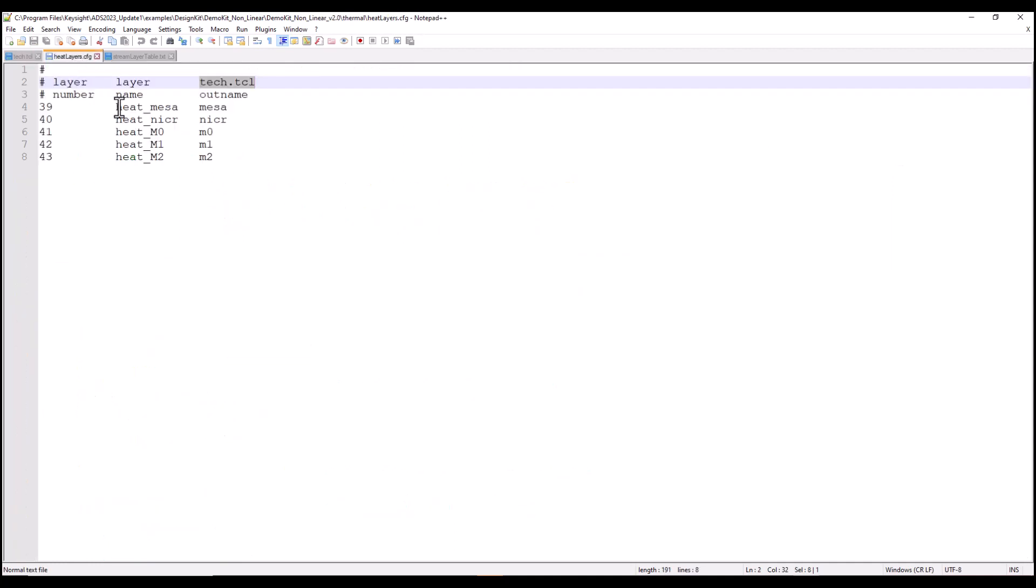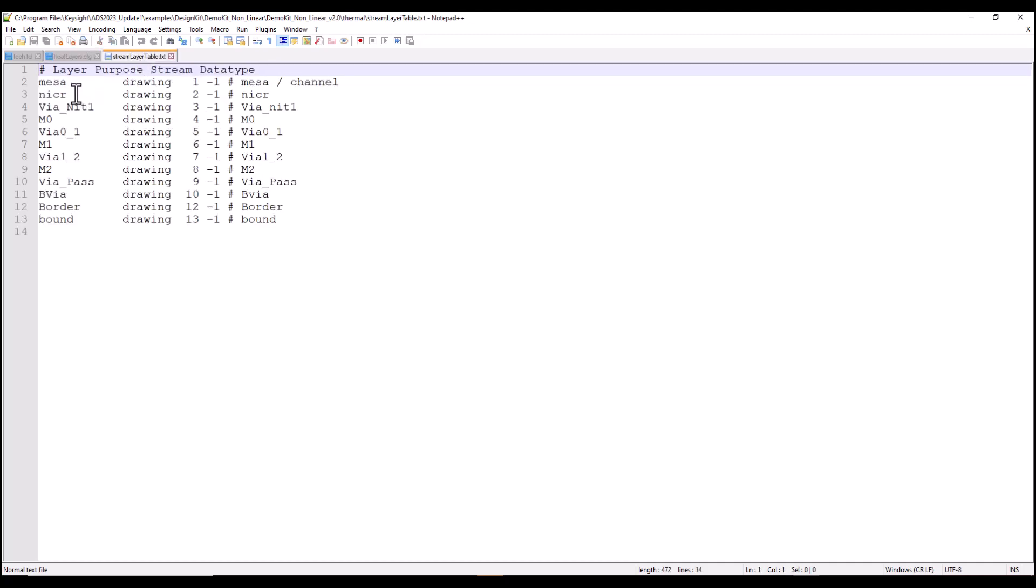Here is the heat layers.config and here you can see the layer name in the thermal stack versus what's available in tech.tcl. So this is basically the layer mapping and here is the stream layer table where you can see all the layers, their purpose, the stream ID information and the kind of data you can expect.